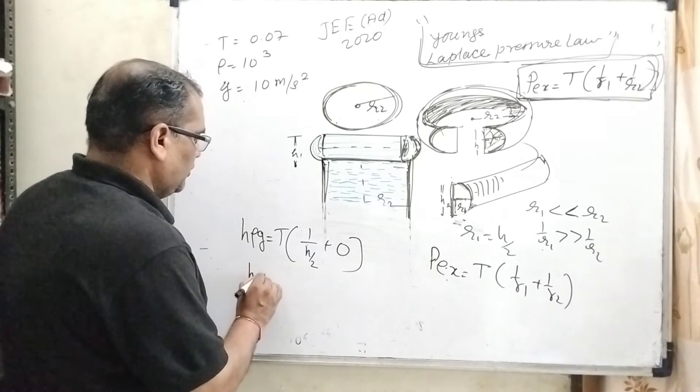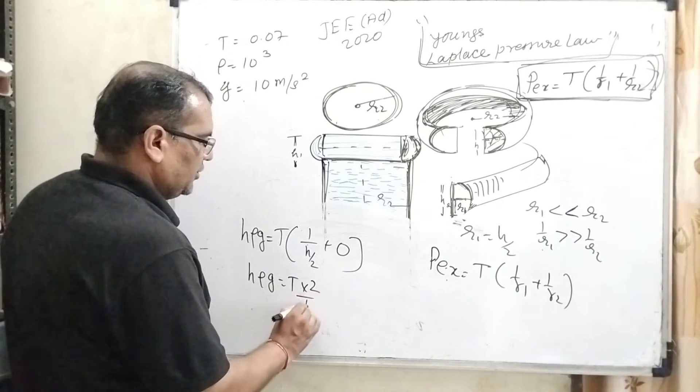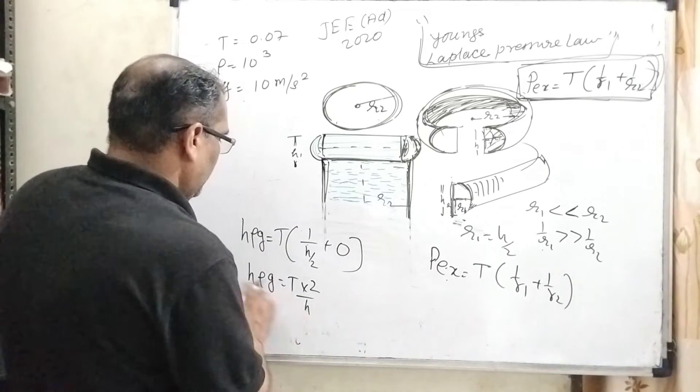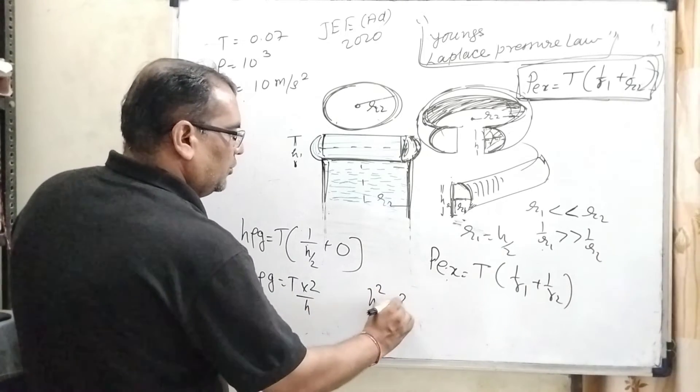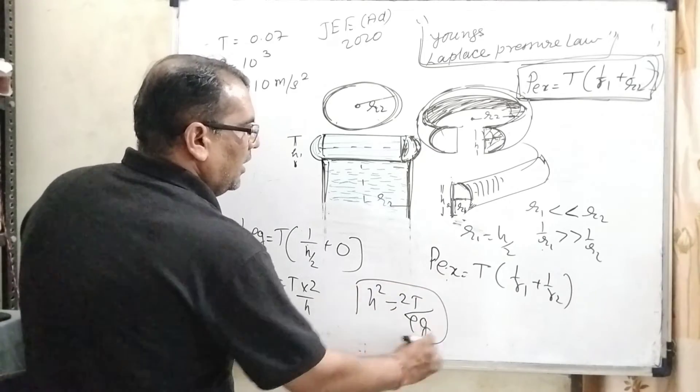Now h·ρ·g equals T·2/h. Here h² equals 2T/(ρ·g). Now it is the formula.